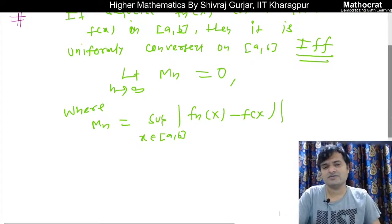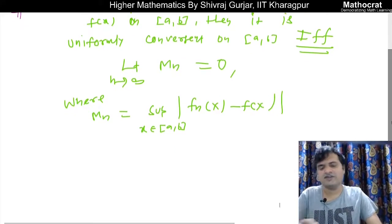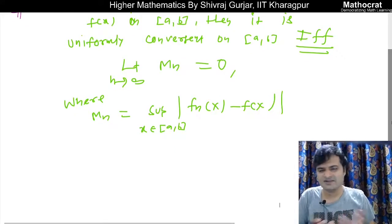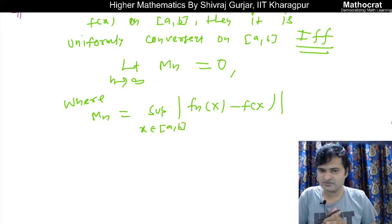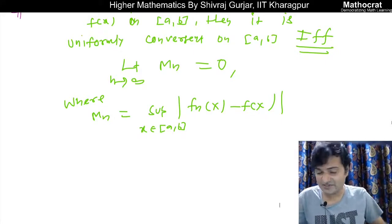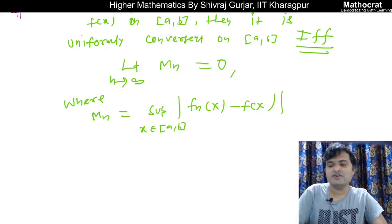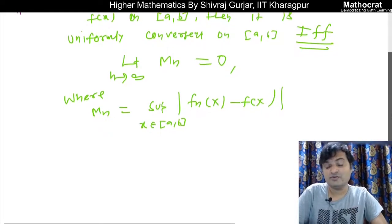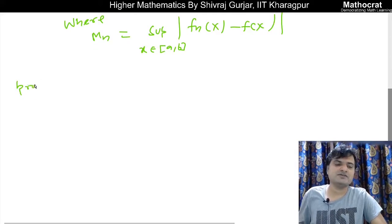We will calculate using the traditional definition, then maximize to find MN. We take the maximum value and then take the limit to infinity. If the limit is 0, it is uniformly convergent; otherwise it is not. It is very straightforward to apply.